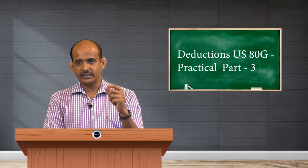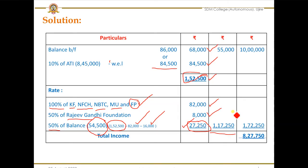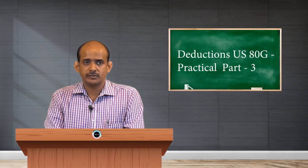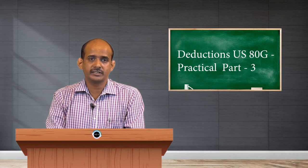This is the total deduction available under section 80G covering without-limit as well as with-limit donations. Now, combining all deductions including 80D and 80E, the total comes to 1,72,250, which is taken to the outer column. From 10 lakh gross total income, if we deduct 1,72,250, the balance comes to 8,27,750. This is the final answer — the total income stands at 8,27,750.